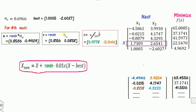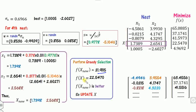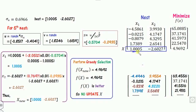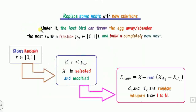The same process is repeated for the fourth nest: calculate u, v, s, then x1 and x2. Greedy selection shows x_new is better than the previous value, so it is updated. For the fifth and final nest, the same procedure is followed. The calculated values happen to be the same as the previous values, so they are copied as-is. After phase 1, all updated positions are recorded.